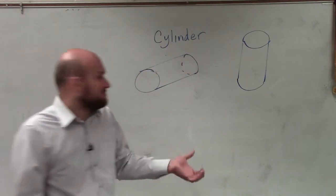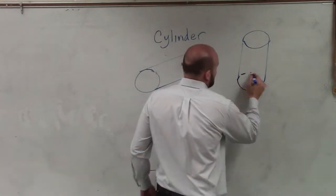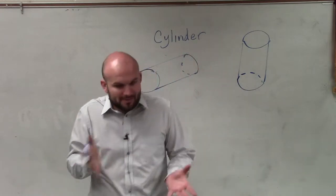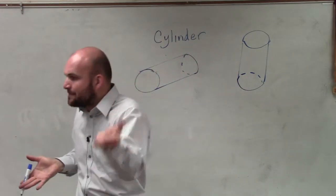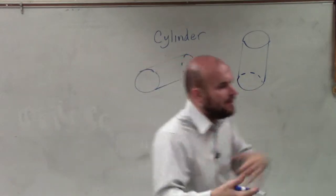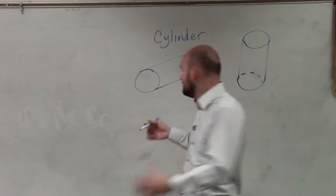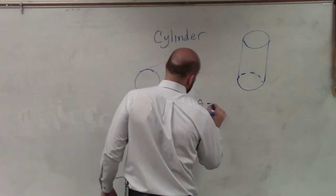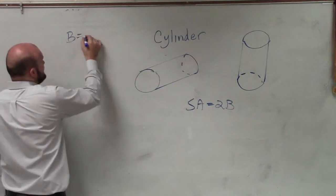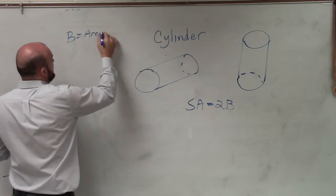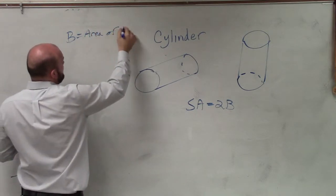So again, if you guys remember, when we're dealing with a prism, what we want to be able to identify is notice again, the base is the same as the top in terms of area. So if I want to find this lateral surface area, again, I need to do 2 times base. Well, again, the base equals the area, or B equals area of base.